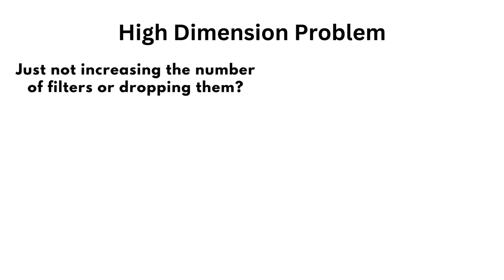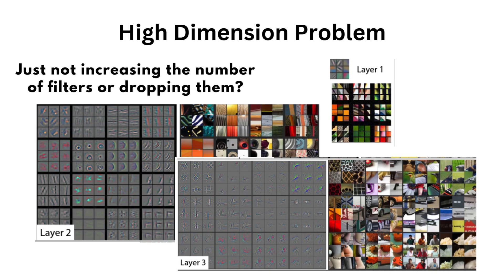To solve this dimensionality problem, one solution would be to not increase the number of filters or simply drop them. However, that would defeat the whole purpose of having a network with high capacity, since its goal is to have a powerful representation of learnable features.